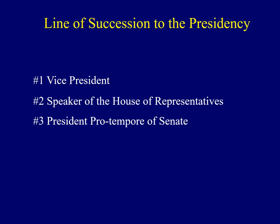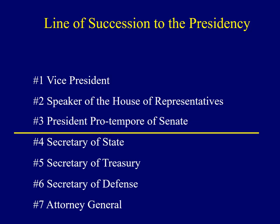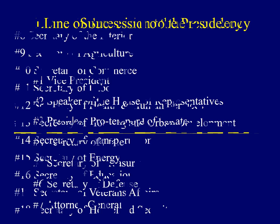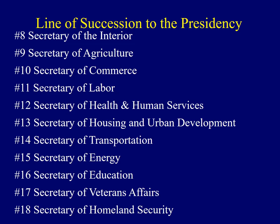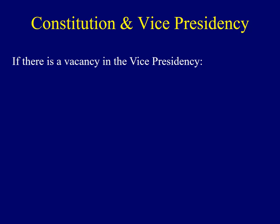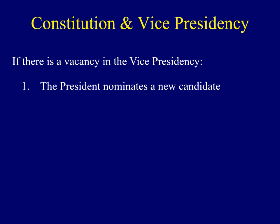Now, if the president was to die, most people know that the vice president would take over. But do you know the next two positions in the line of succession? The next person would be the Speaker of the House. And after that, it would be the president pro tempore of the Senate, which is a position that most Americans have never even heard of. The line of succession continues much further and is set by federal law, beginning with the Secretary of State, then Treasury, Secretary of Defense, and Attorney General, all the way down to the Secretary of Homeland Security.